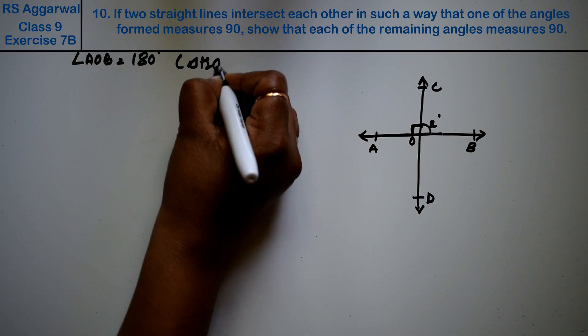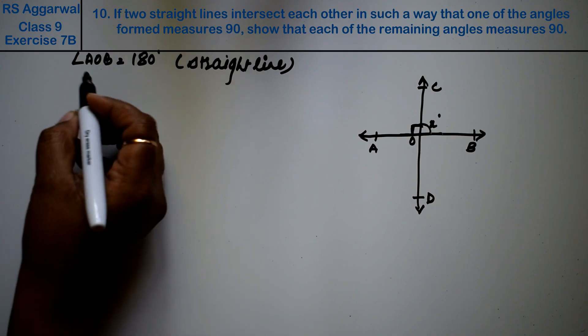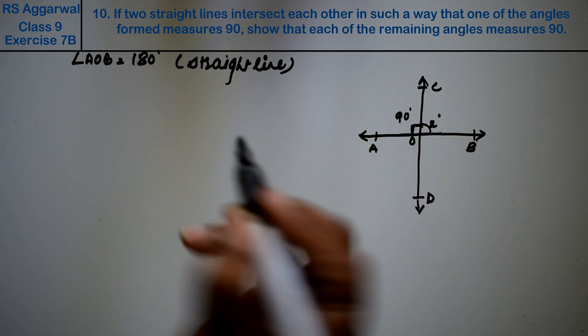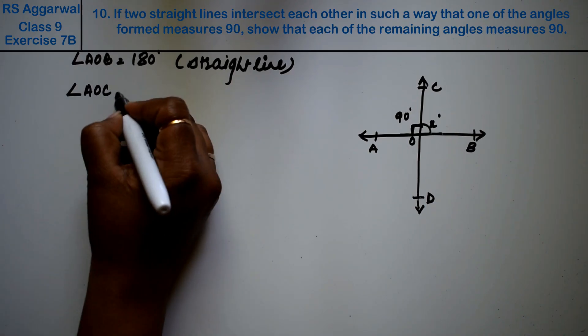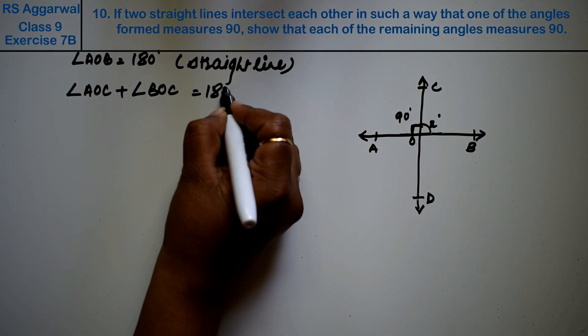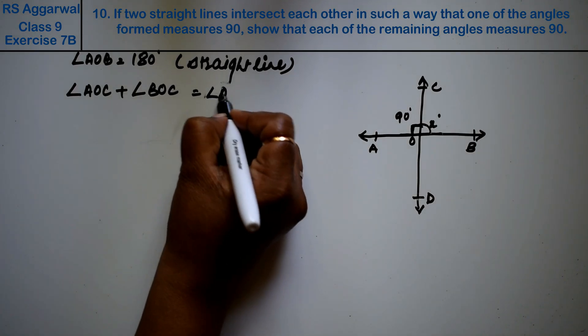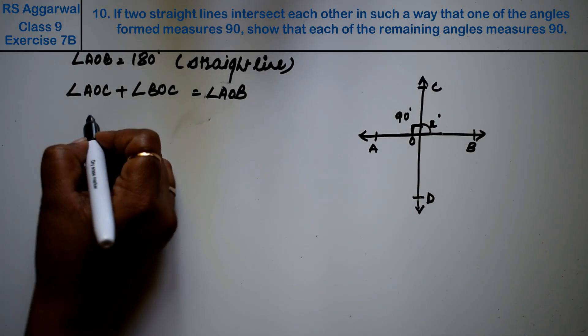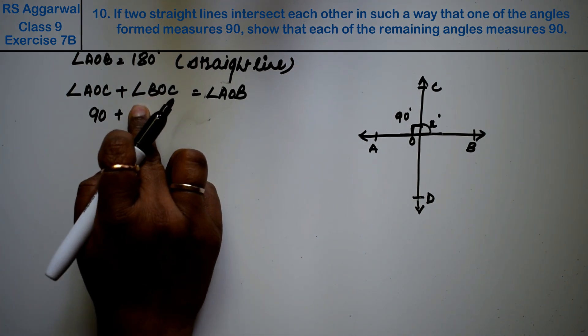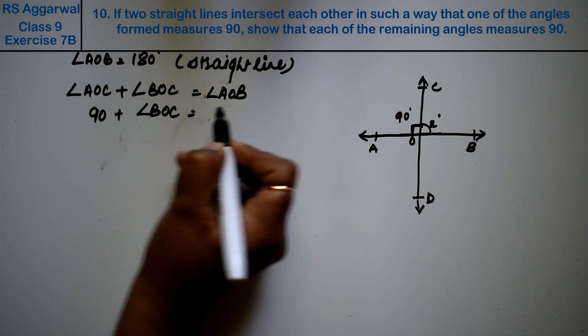This is because of the straight line theorem. Now this straight line is AOB, and we know that this is 90 degrees given directly. We can write angle BOC.